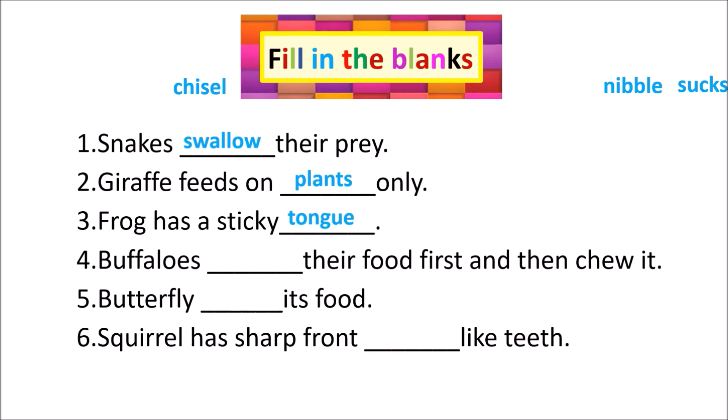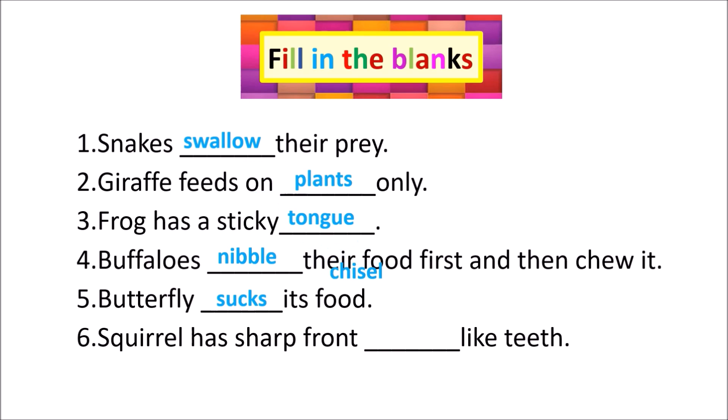Answer: Frog has a sticky tongue. Number 4: Buffalos __ their food first and then chew it. Answer: Buffalos nibble their food first and then chew it. Number 5: Butterfly __ its food. Answer: Butterfly sucks its food. Number 6: Squirrel has a sharp front __ like teeth. Answer: Squirrel has a sharp front chisel-like teeth.